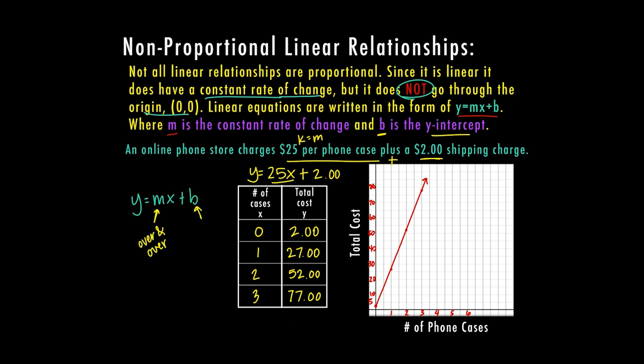This B is going to be your one time add on. So this could be either, in this case, it was a shipping charge. Sometimes if you have money in the bank, then that's going to be your one time add on because you start at a certain amount, you don't start with $0.